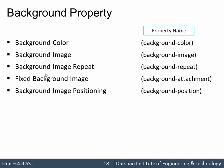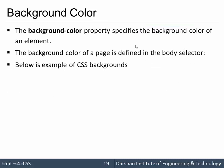Let's start with background color. The property for that is background-color and it specifies the background color of an element. That element can be anything — the whole body, a paragraph, an h1, or some element with a class, id, or combination. Anything we target will apply that background color.